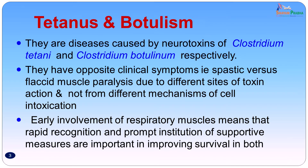The bacteria are similar, the neurotoxins produced by them are similar. Yet they have opposite clinical symptoms — that is spastic versus flaccid muscle paralysis — due to different sites of toxin action and not from different mechanisms of action. Both mechanisms of action of the neurotoxin of Clostridium tetani and Clostridium botulinum are the same, but they act at different sites. There is early involvement of the respiratory muscles, which means rapid recognition and prompt institution of supportive measures is important to help survival of the patient.